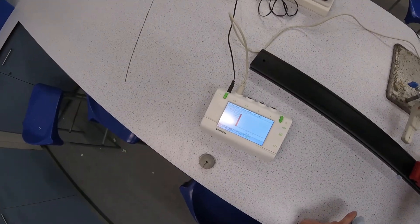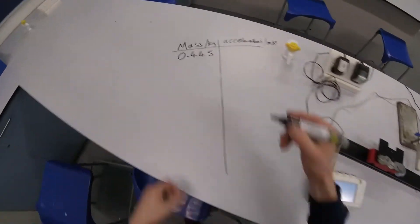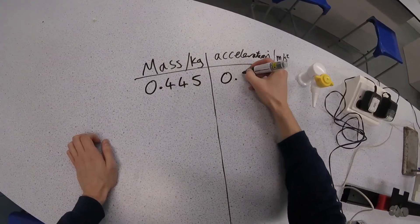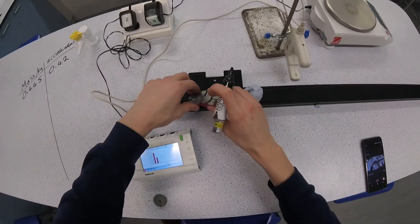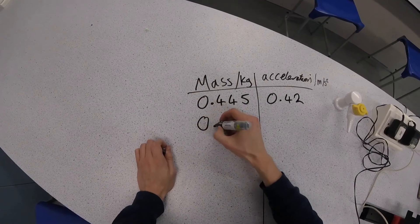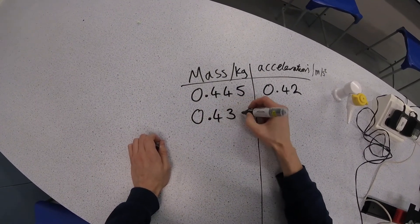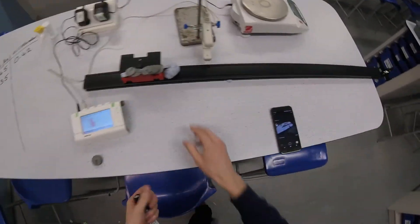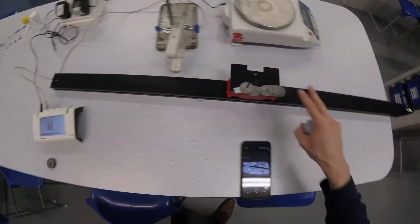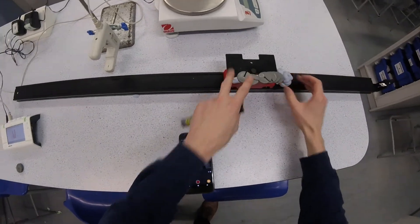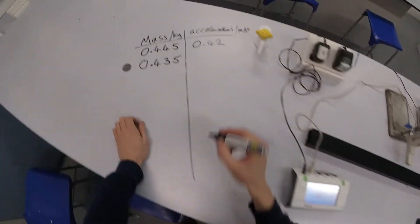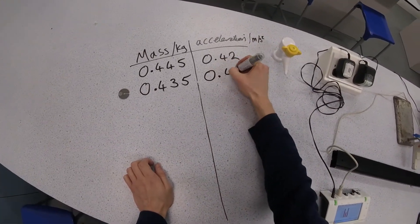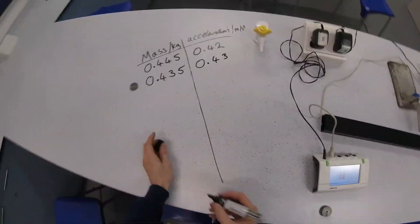I'm taking the slotted mass off the car. Like I said before, these slotted masses have a mass of 10 grams, so they only reduce the mass of the car by 10 grams. So it goes down to 0.435. And again, I let it accelerate down the track. Put the new acceleration in and you can see it's barely changed.